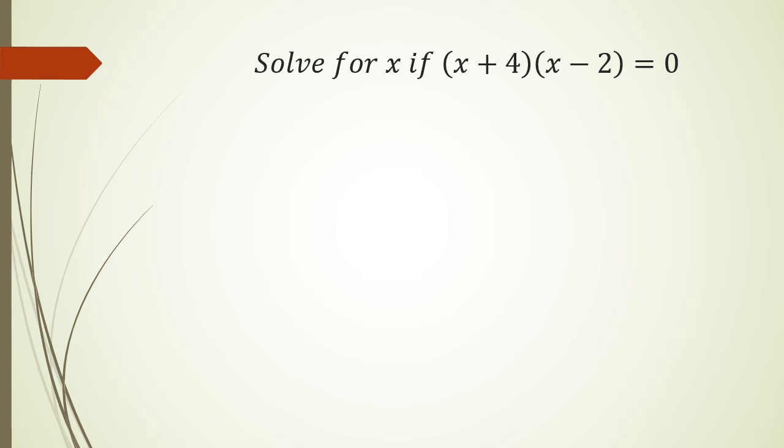So in this case we've actually got two numbers multiplying equals zero, which means either x+4 has to equal zero or x-2 has to equal zero. One of those numbers has to equal zero, otherwise you're not going to get the final product of zero.